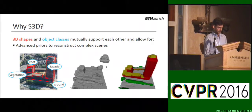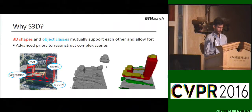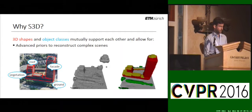What is our motivation to do that jointly? There are synergies between these two domains in both directions. On one hand, object classes live in scene space and not in image space, and vice versa, assumptions about shapes are object specific. This mutual support allows us to use advanced priors to reconstruct complex scenes. This slide shows how class-specific priors can lead to superior 3D models, compared to a generic regularization of the surface area shown in the middle.